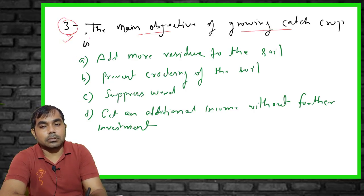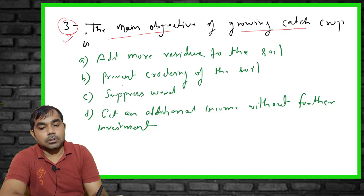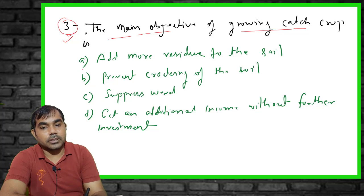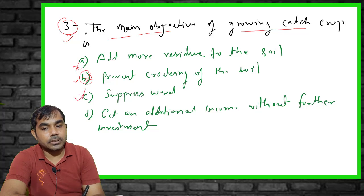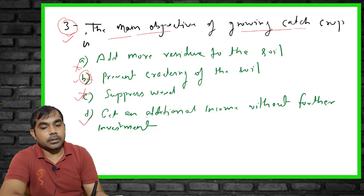The third question discusses the main objective of growing a catch crop. Options are: add more residue to the soil (wrong), prevent soil cracking (wrong), suppress weeds (wrong). The right answer is D: get additional income without further investment.